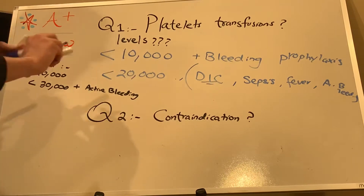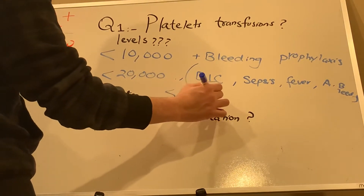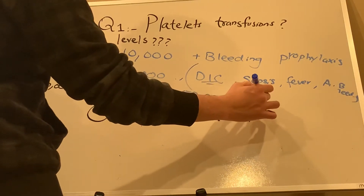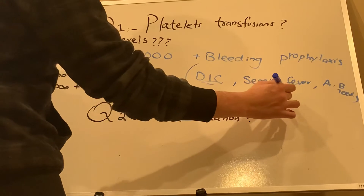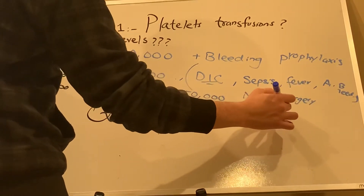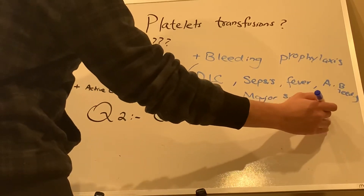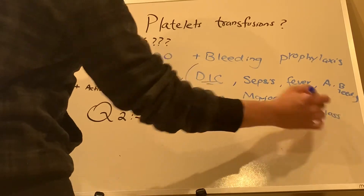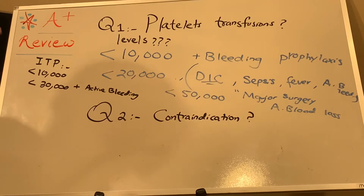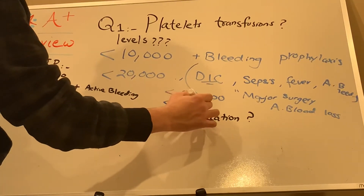Now if we talk about less than 50,000 — this is always in the case of major surgery, acute blood loss. Basically, they put it as major surgery, major blood loss, or acute hemorrhage. Acute blood loss basically covers hemorrhage, though it is unclear why they wrote it separately.